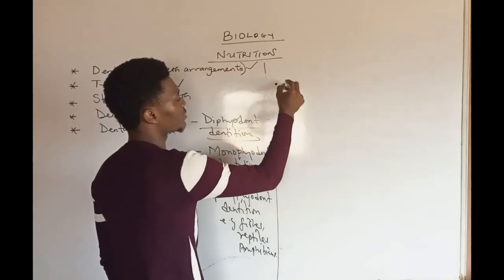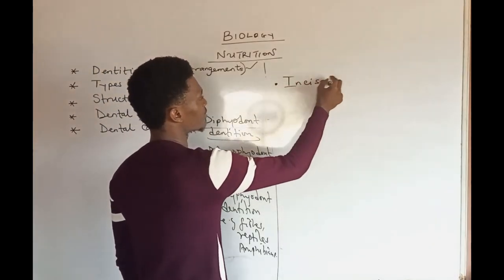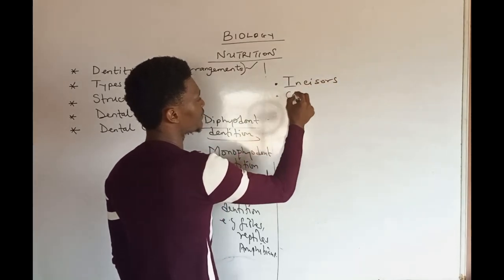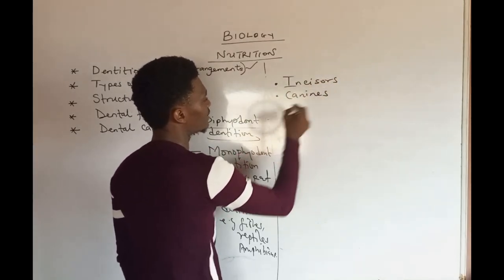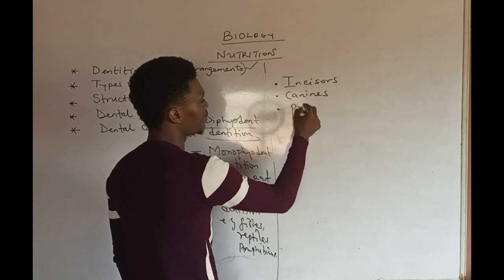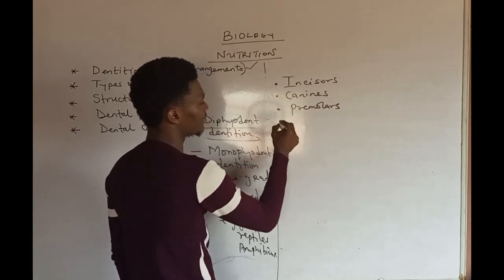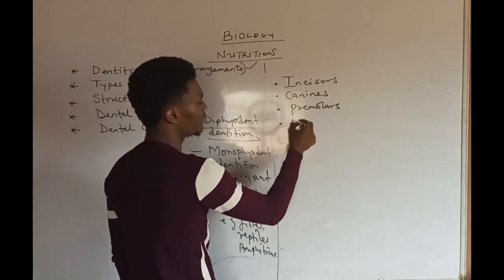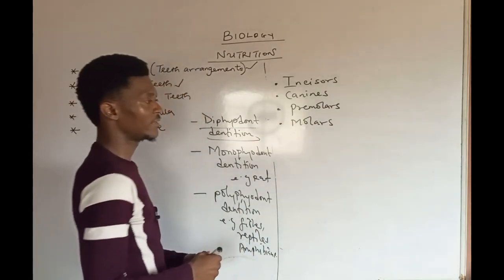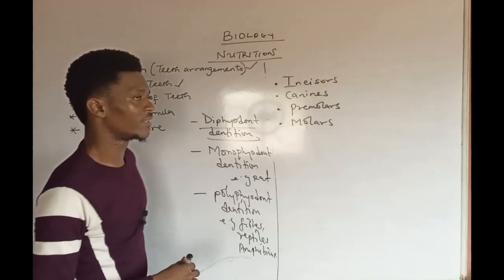For the four types of teeth under heterodonts, we have: first, the incisors; then we have the canines; then we have the premolars; and then we have the molars.